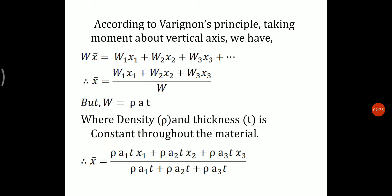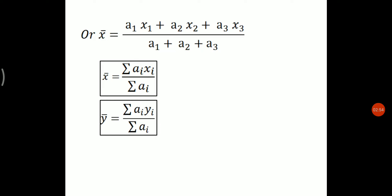We also know that w = ρ·A·t, where ρ is the density of the material and t is the thickness, which is constant throughout. Substituting for w, we get ρ·a1·t·x1 + ρ·a2·t·x2 + ρ·a3·t·x3 divided by ρ·a1·t (noting that area varies, hence a1, a2, a3). Simplifying by cancelling the constants, x-bar = (a1·x1 + a2·x2 + a3·x3) / (a1 + a2 + a3), or in general, x̄ = Σ(aᵢ·xᵢ) / Σaᵢ. Similarly, ȳ = Σ(aᵢ·yᵢ) / Σaᵢ.